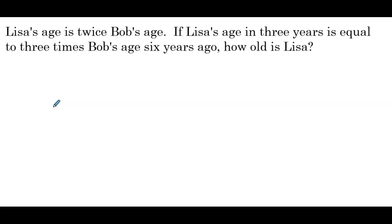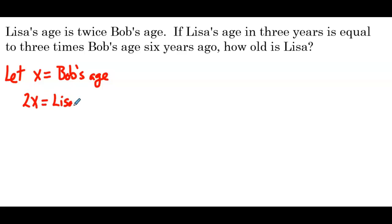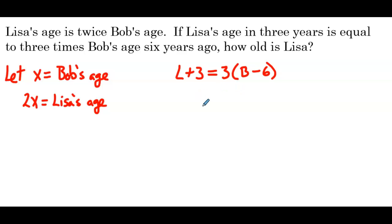Our last example: Lisa's age is twice Bob's age. If Lisa's age in 3 years equals 3 times Bob's age 6 years ago, how old is Lisa? Since Lisa is defined in terms of Bob, x is Bob's age and 2x is Lisa's age. This one involves adding years to Lisa's age but subtracting years from Bob's age, but as long as we stay consistent with our setup, we should have no issue solving.